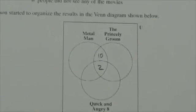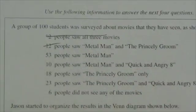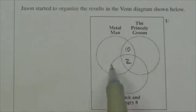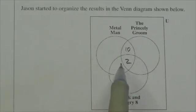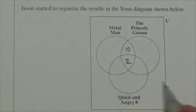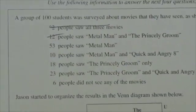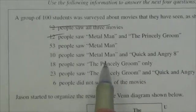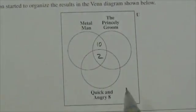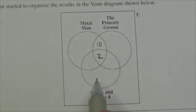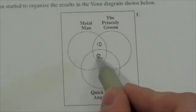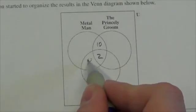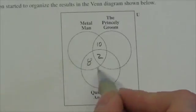Fifty-three saw Metal Man, but I'm not quite at the point where I can use that information because there are four subsets in Metal Man and I only know two of them. Ten people saw Metal Man and Quick and Angry 8 - that's this overlap. There are two subsets there, two already there, so this has to be eight so that their total is ten.